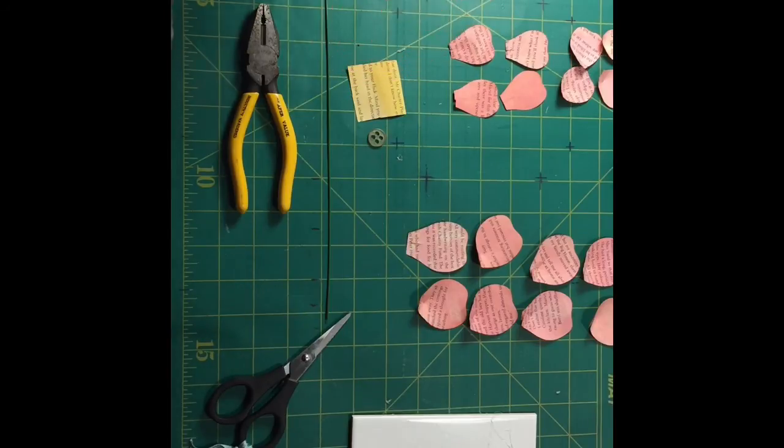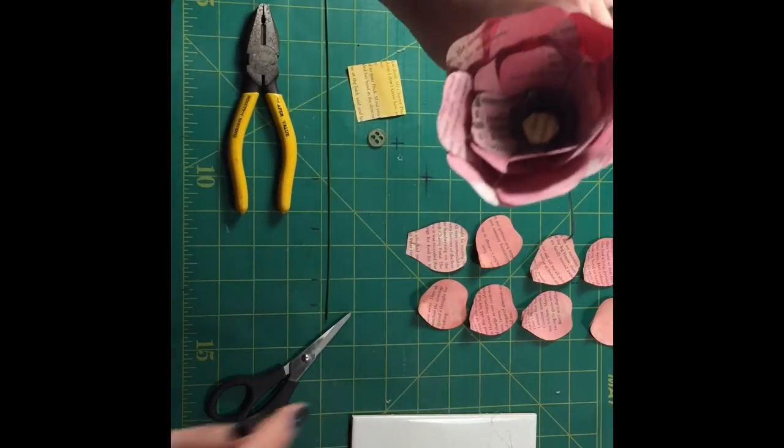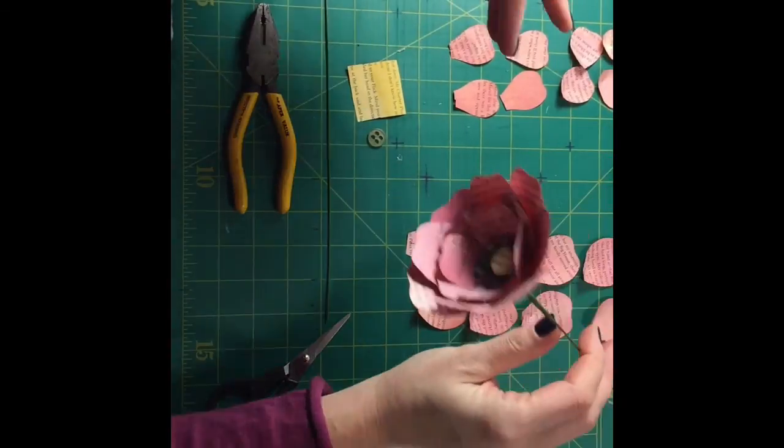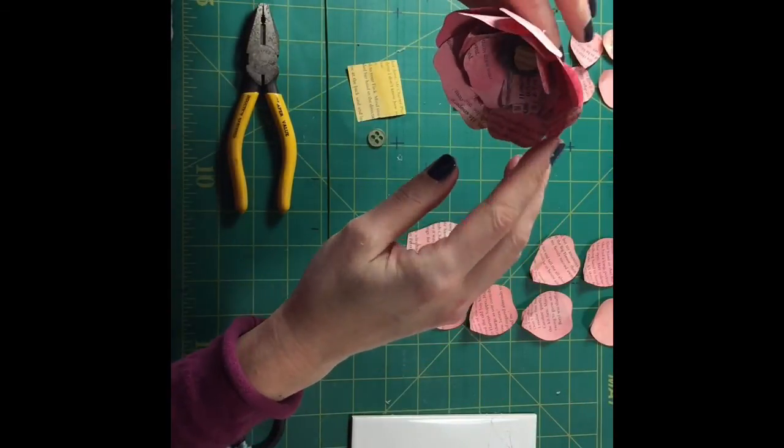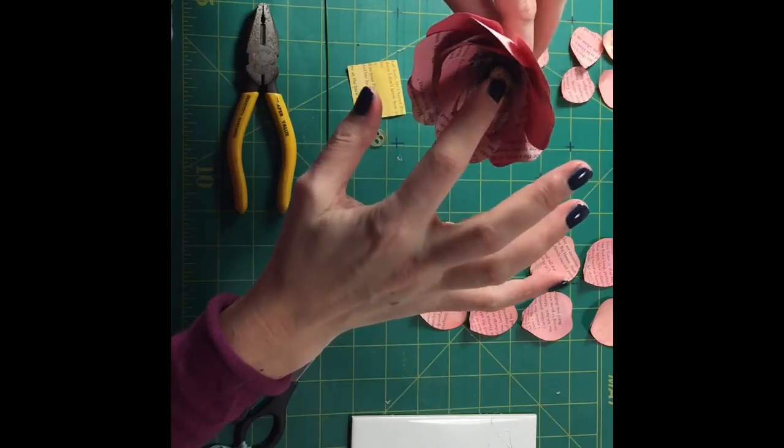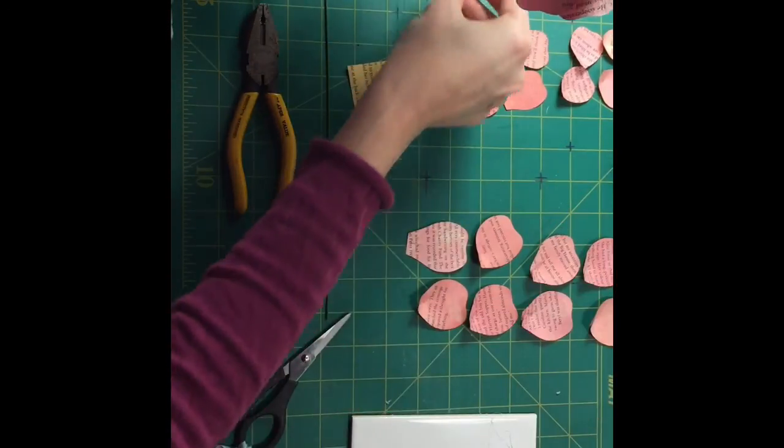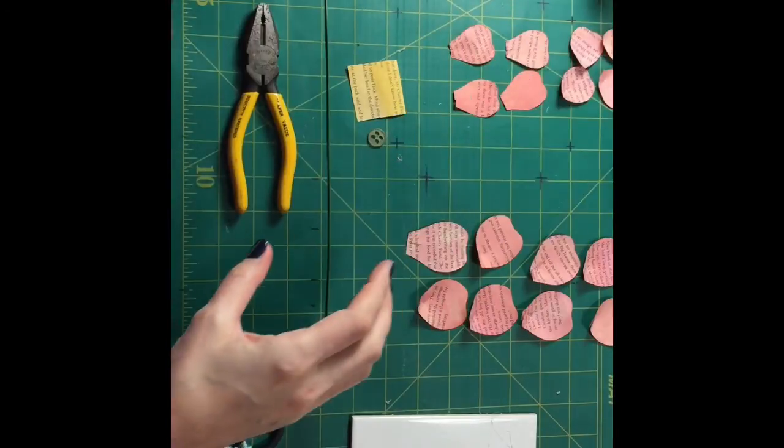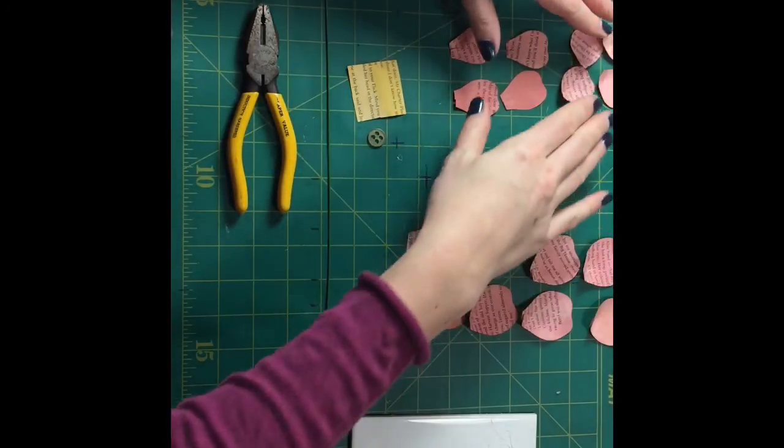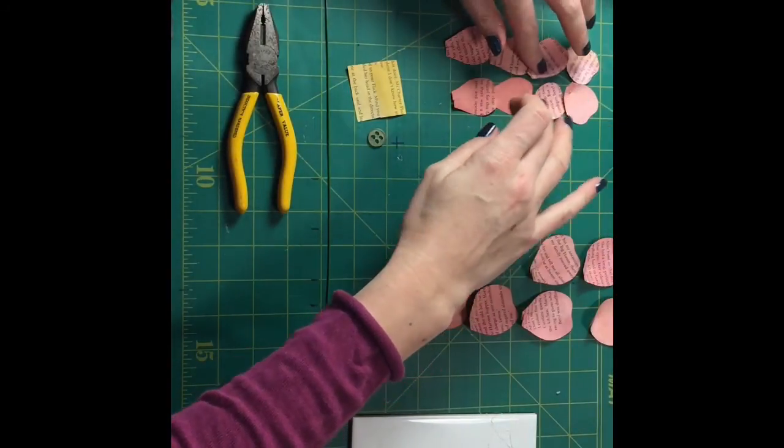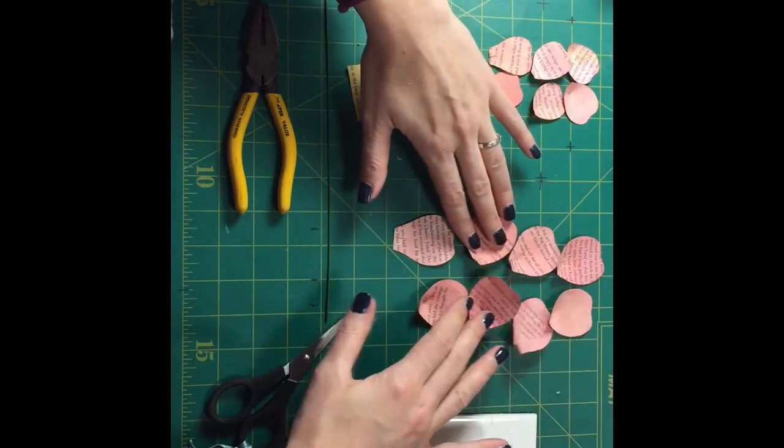So today in this video we are making the wild rose. This is again large and small petals, a middle with a button and one of those thingy bobs, the stems that go in the middle. So we need for this eight small petals and we need eight large petals.